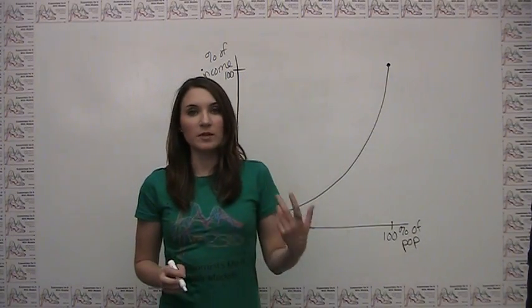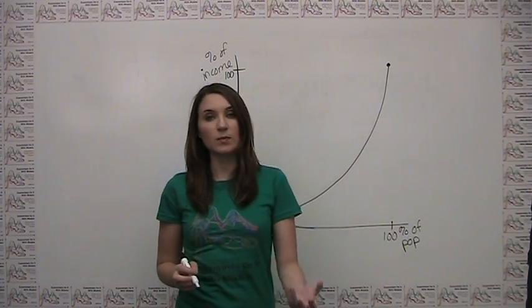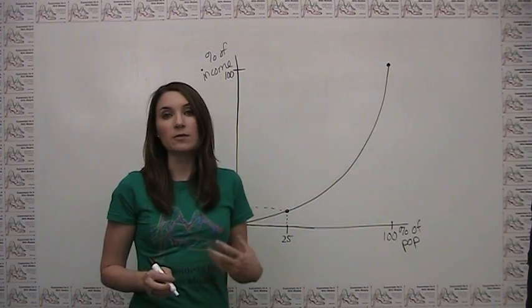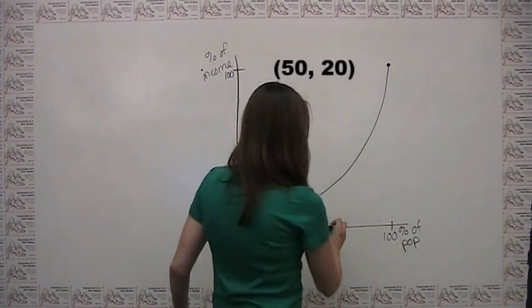Similarly, if it were the case hypothetically that the bottom 50% of the population had 20% of the income, the point 50-20 would also be on our Lorenz curve, and it would look something like this.